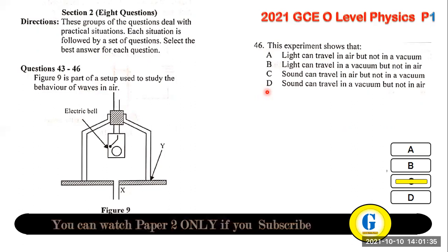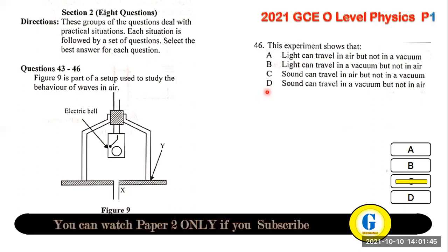Question 46: this experiment shows that sound can travel in air but not in vacuum — sound requires a material medium for its propagation.